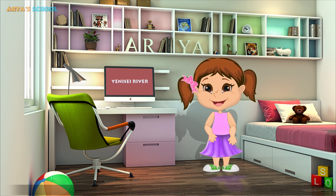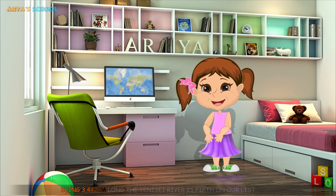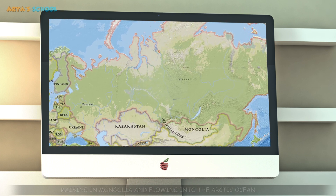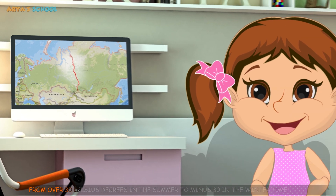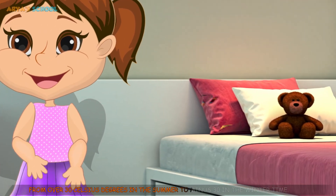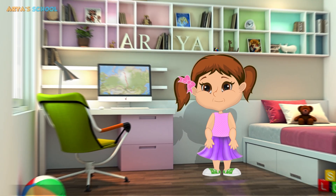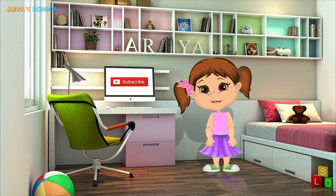Yenisei River. Being 3,442 km long, the Yenisei River is 5th on our list, rising in Mongolia and flowing into the Arctic Ocean. This river is subject to very wide seasonal temperature variations, from over 30 degrees Celsius in summer to minus 30 in wintertime. It was me, Aria, with you today. If you enjoyed it, don't forget to subscribe. See you in the next episodes.